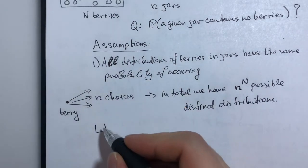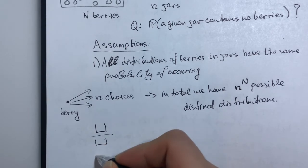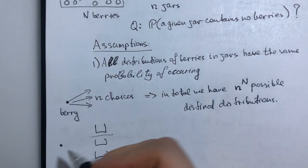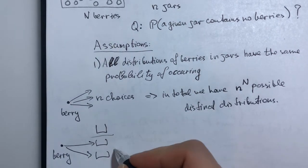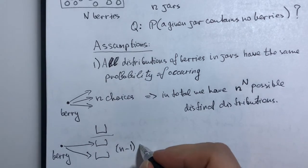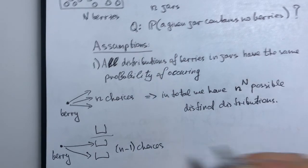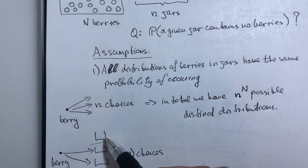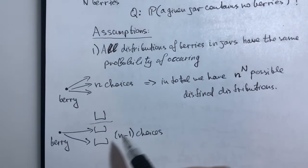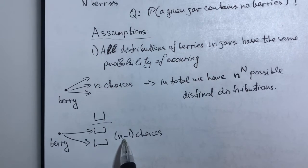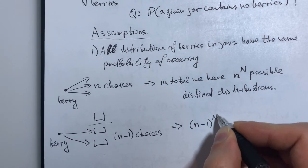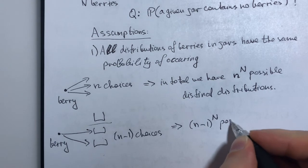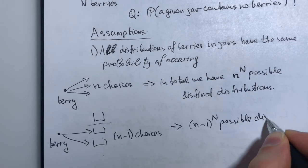Now if we think about our question, we have a jar that remains empty and then we have all other jars. That means each berry now only has N minus 1 choices. We have fixed a certain jar and we do not allow any berries to go inside, so now they choose between n minus 1 remaining jars. That means we have n minus 1 to the n possible distributions.